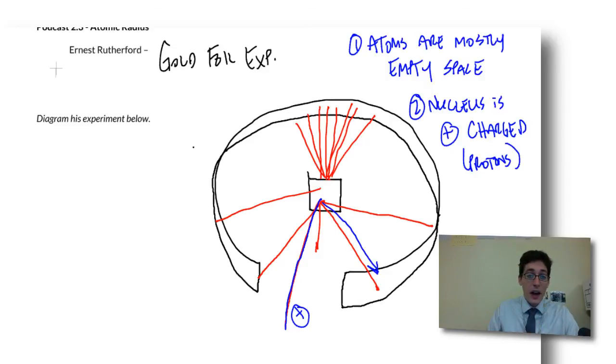The atom is a lot of empty space. So we've got a very, very small nucleus. And then we've got our electrons buzzing around on the outside.